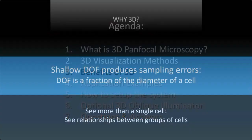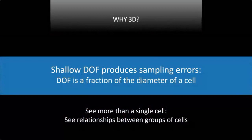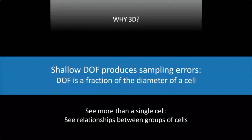Why do we need 3D? The problem with microscopes is they have a very shallow depth of field, which produces sampling errors — you can only see a tiny bit of the specimen at one time. This is a real problem for cells, for example. A cell is 10 to 20 microns in diameter, but most histologists cut 5 micron sections, so you're only seeing a fraction of a single cell's diameter. With panfocal microscopy, you make multiple pictures looking at 20, 30, 40, 50, 100, 150 microns, so you see groups of cells and how they interact. You overcome the depth of field problem.